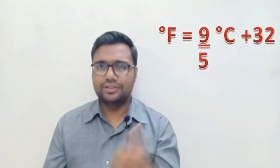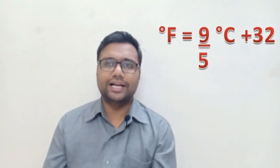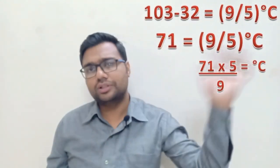Let's convert 103 degree Fahrenheit to Celsius. The relationship is: degree Fahrenheit equals 9/5 times degree Celsius plus 32. Substituting 103 for Fahrenheit, we subtract 32 from 103 to get 71. That gives us 9/5 × Celsius = 71. Taking 9/5 to the other side, we get Celsius = 71 × 5/9, which equals 355 divided by 9.